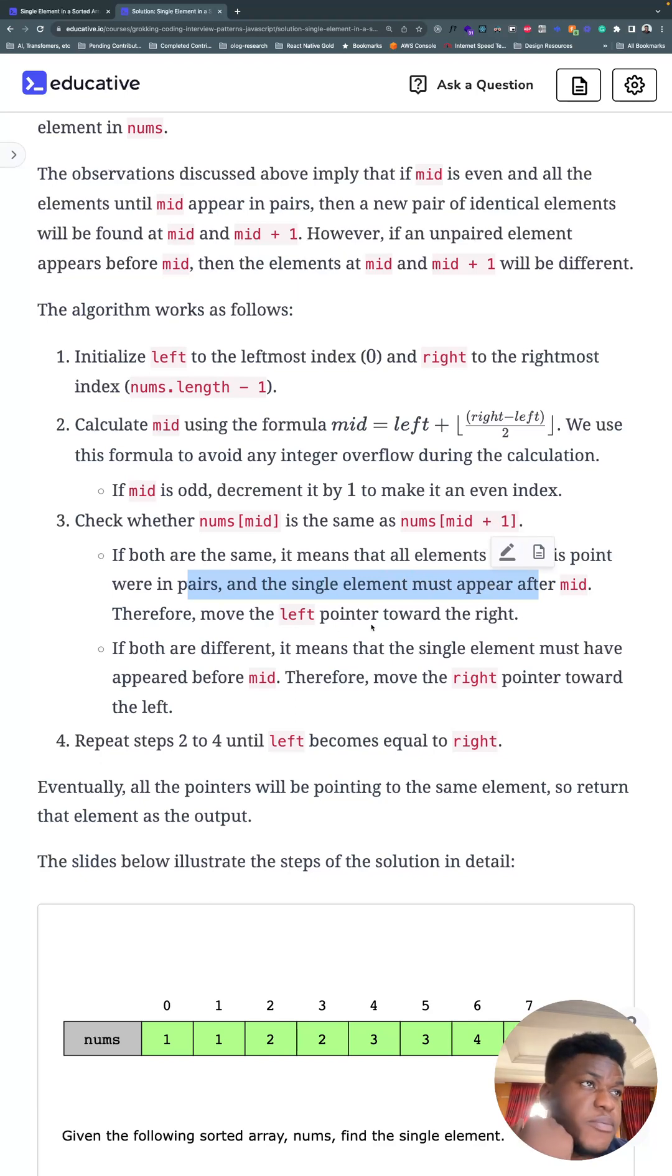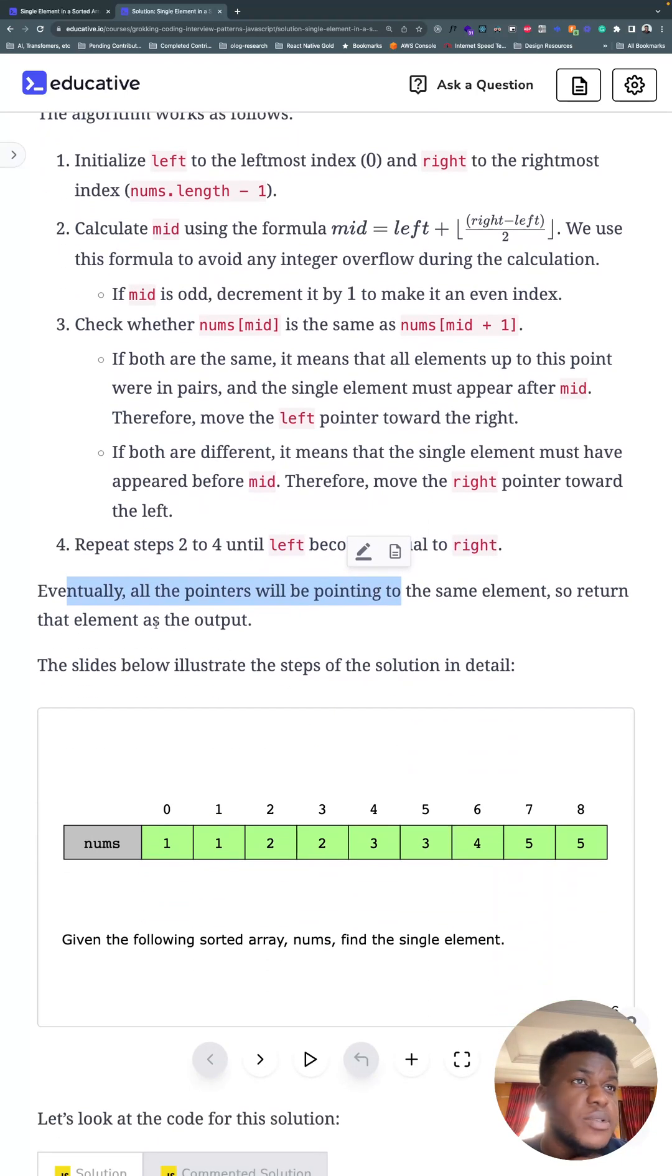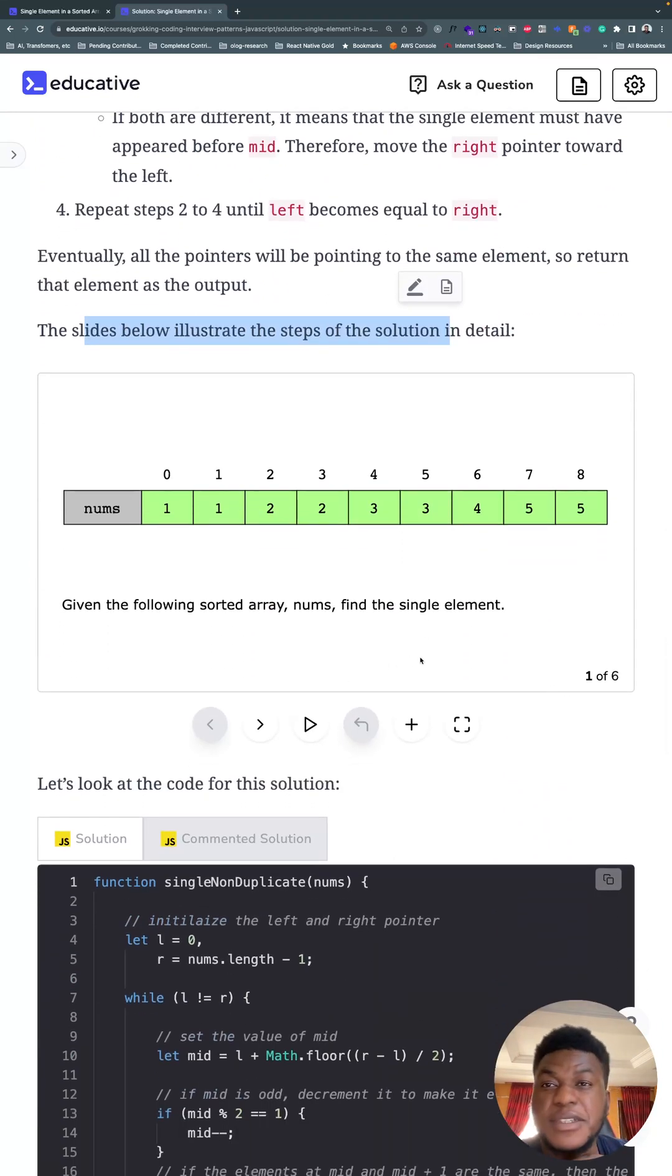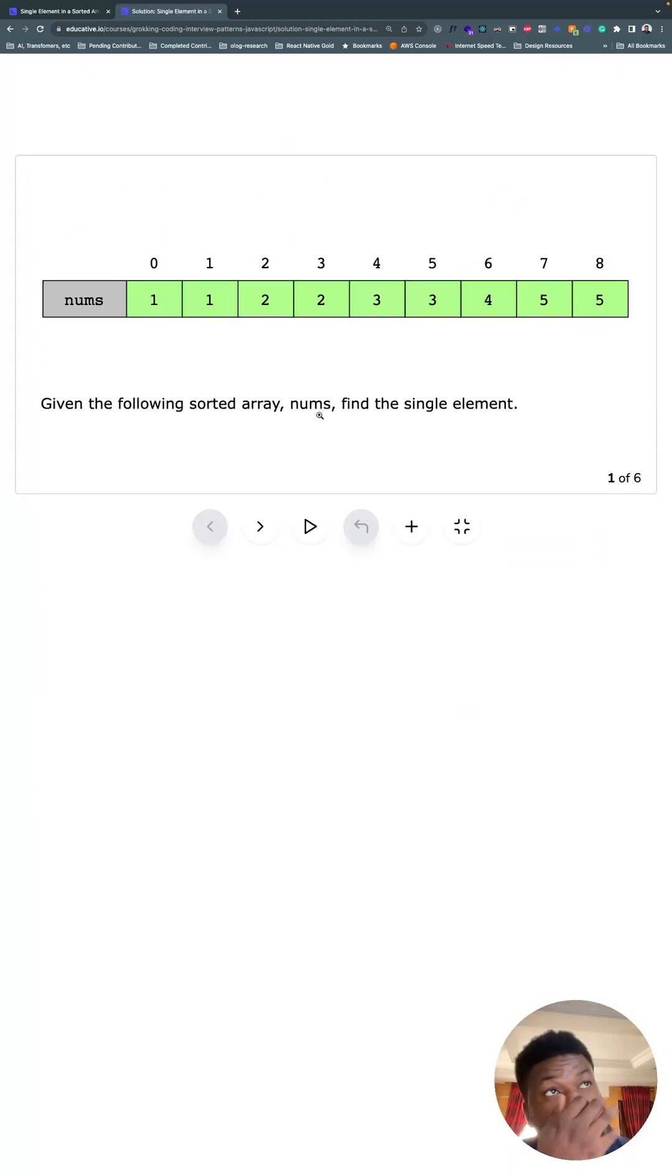Otherwise, if both of them are different, it means the single element must have appeared before mid, so move the right pointer toward the left. Repeat steps two through four until left becomes equal to right. Eventually all pointers will be pointing to the same element, so return the element as the output.